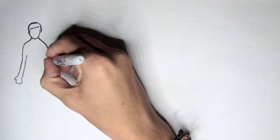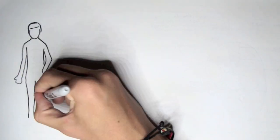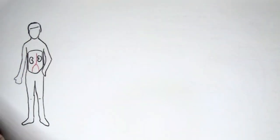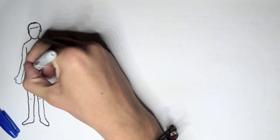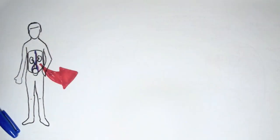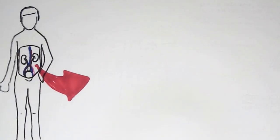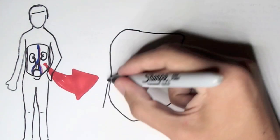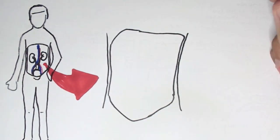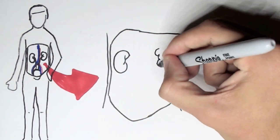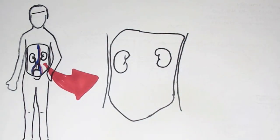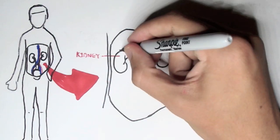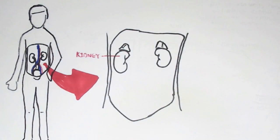We have this person with an open abdominal cavity, and this is where the kidneys are situated, as well as other functional organs. If we zoom into the open abdominal, we can see two kidneys - we each have two kidneys, the left one being slightly higher than the right.